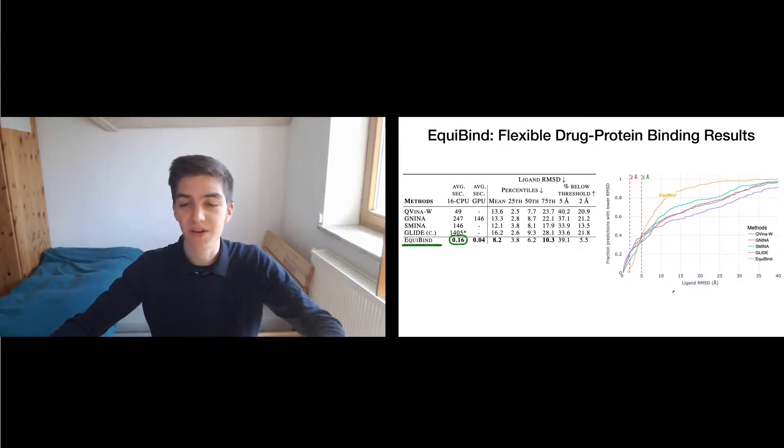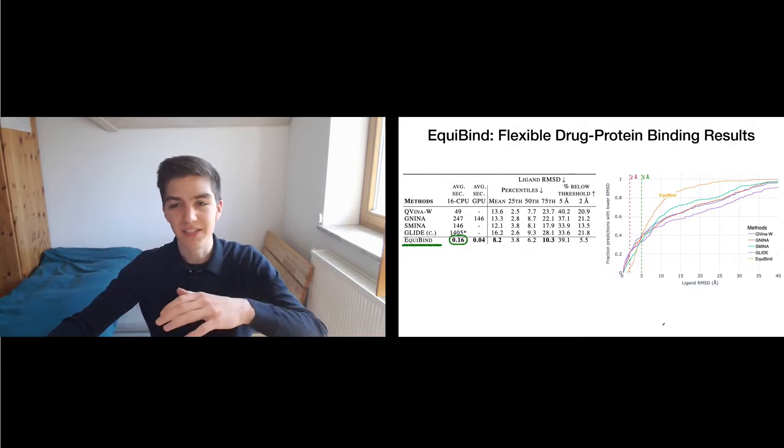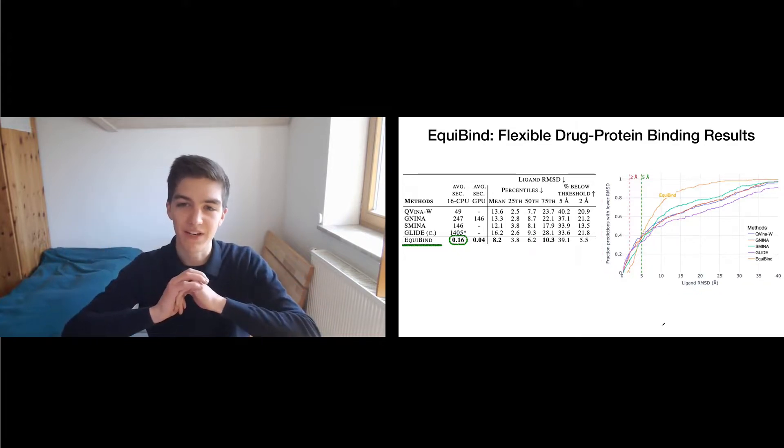Now, let's have a look at these curves over here, where on the x-axis, we have the error of our predictions. And on the y-axis, we have the fraction of predictions that is better than this error. And we can see that EquiBind in orange here, in this upper region, it is doing better than the baselines.